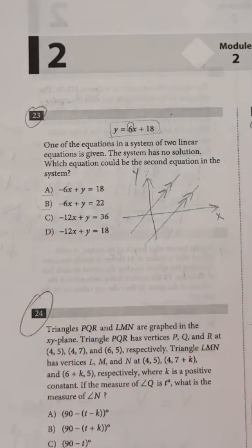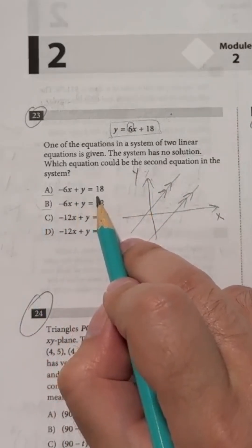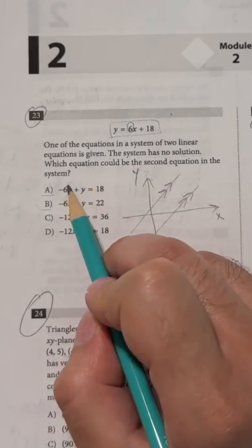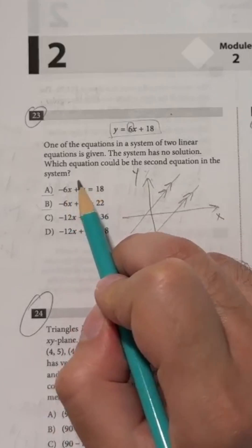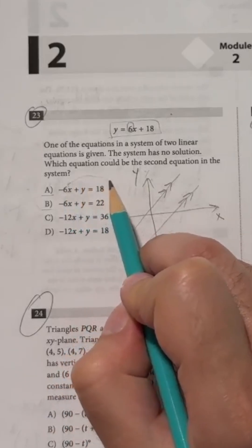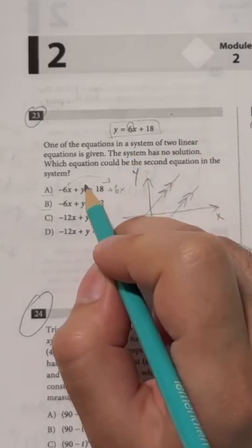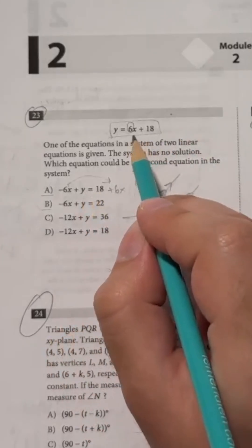So the only two possible options are a or b, but a cannot be the answer because it is the exact same equation as the one given to us. If you take minus 6x to the right side, you will have the equation y equals 6x plus 18, and that's the given.